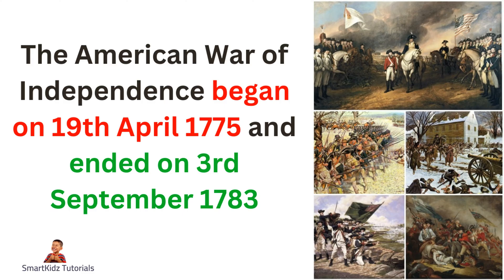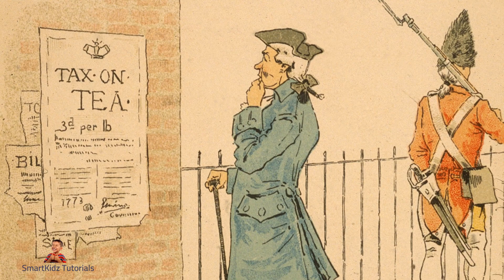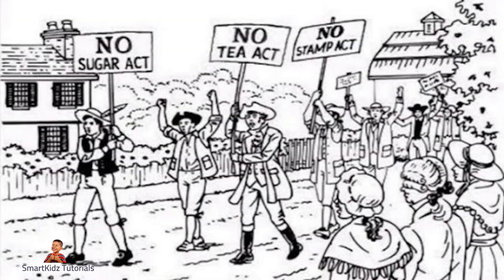The colonists fought for their rights, independence, and the establishment of a self-governing nation, which they achieved with the signing of the Treaty of Paris in 1783. The British policy of taxation played a significant role in leading to the American War of Independence. The British government sought to impose various taxes on the American colonies to help pay for the costs of the French and Indian War, which had ended in 1763. However, the colonists felt that they were being unfairly taxed without representation in the British Parliament, which they believed violated their rights as British subjects.